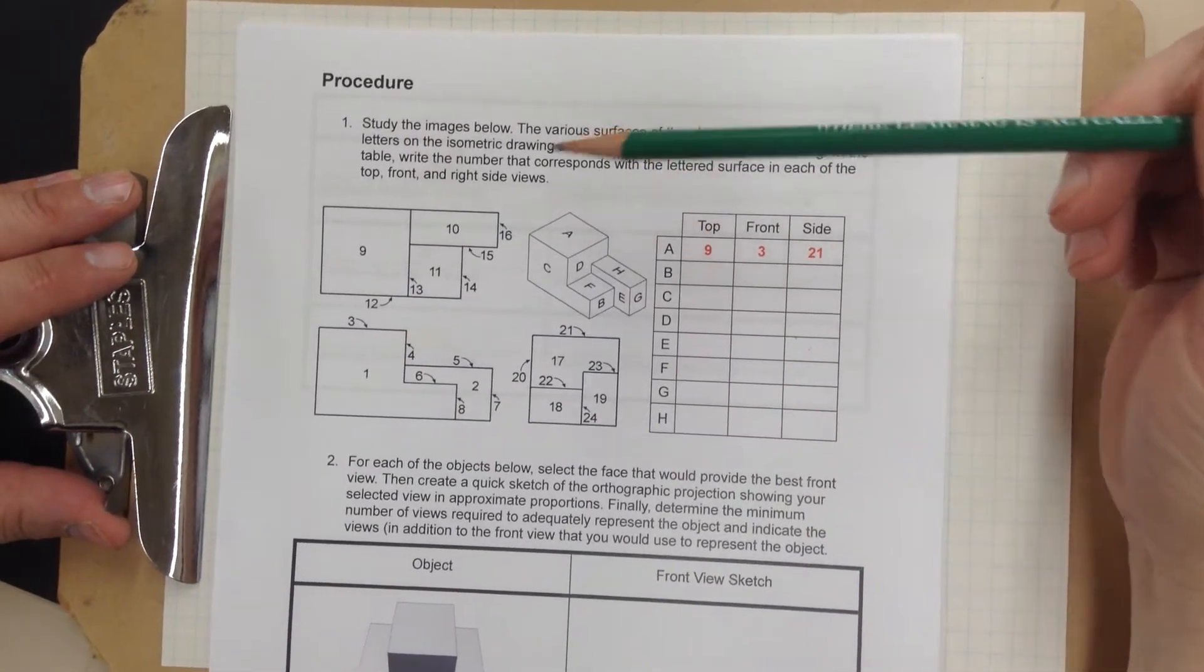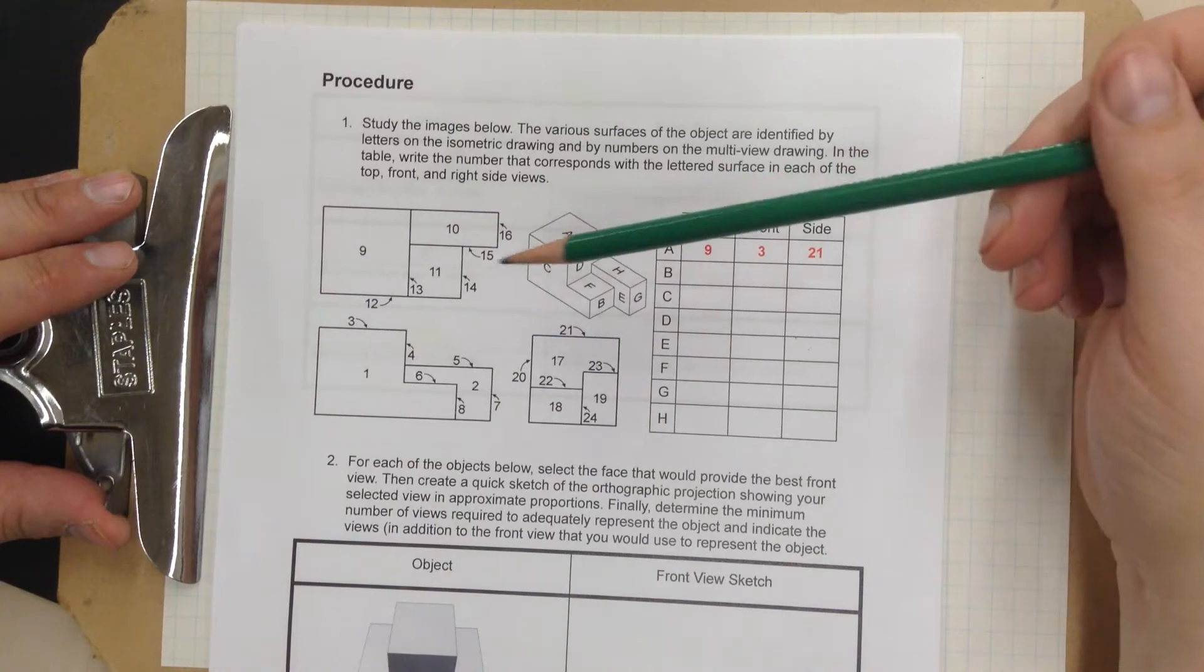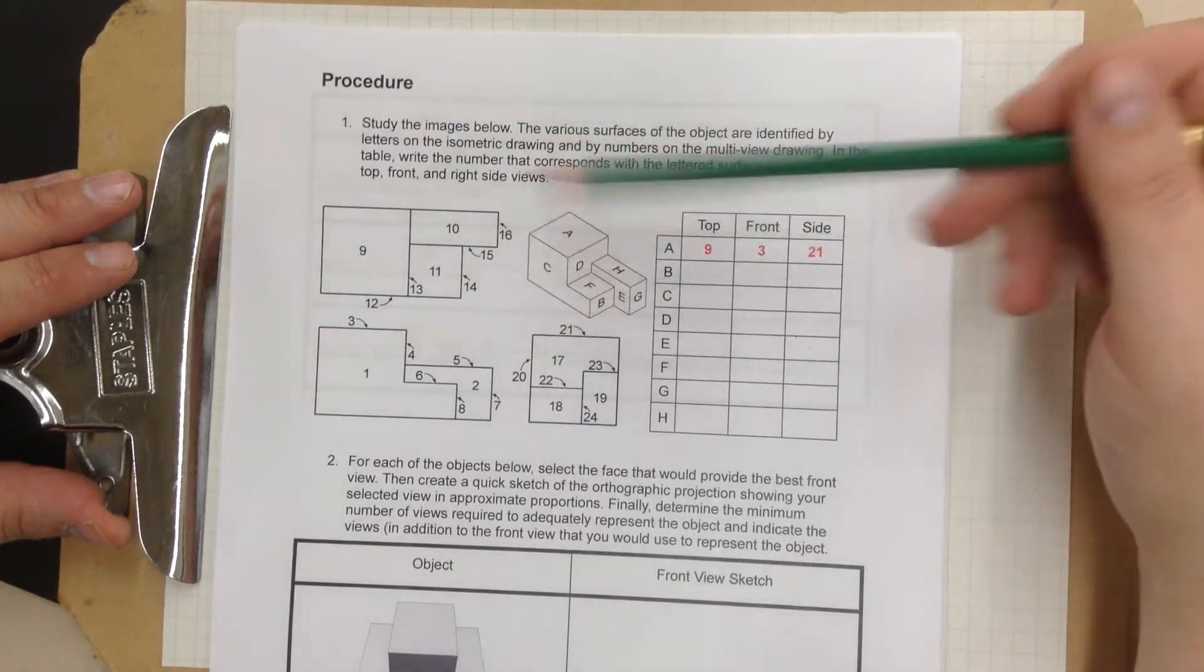Okay, let's go ahead and check out Activity 2.4 with the multi-view sketching. This gets a little bit confusing, so I want to explain it to you.